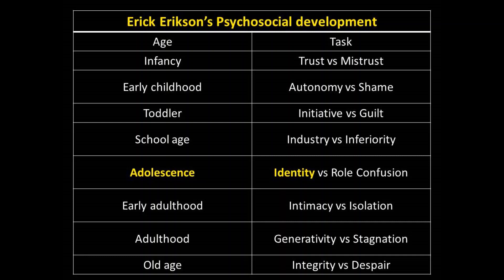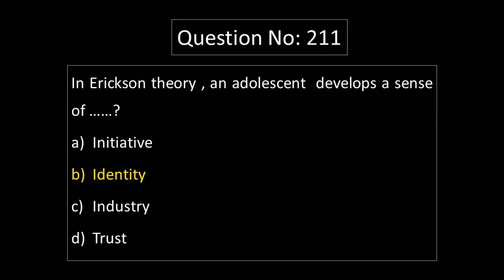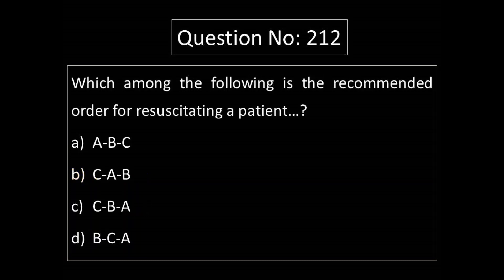Continuing Erikson's stages — Early Adulthood: Intimacy versus Isolation. Middle Adulthood: Generativity versus Stagnation. For the adolescent stage, the developmental task is Identity. The answer is Option B: Identity.